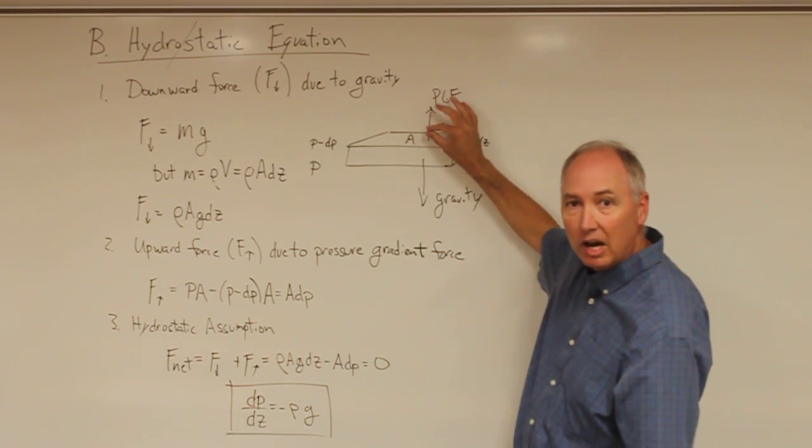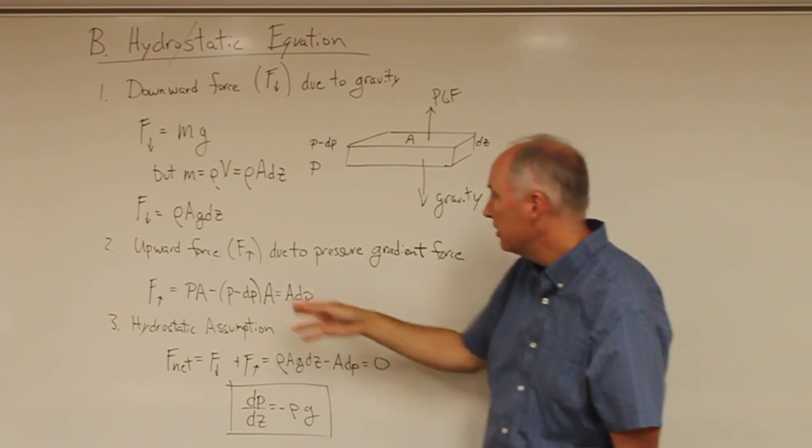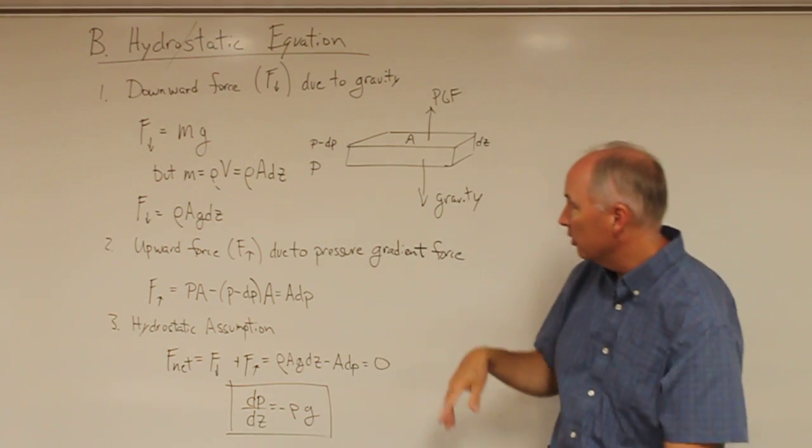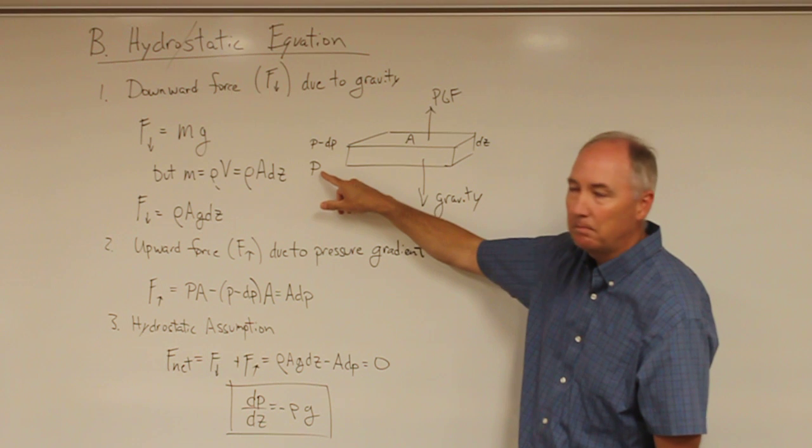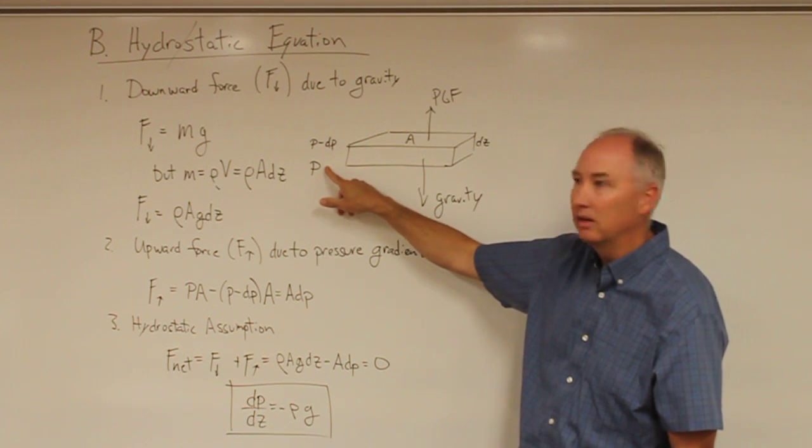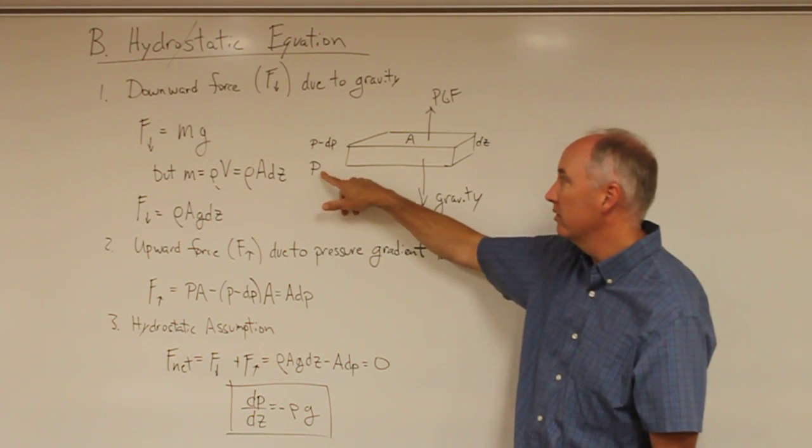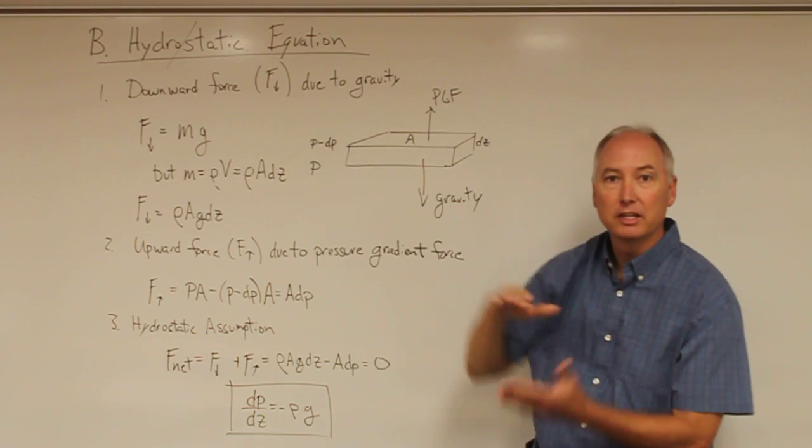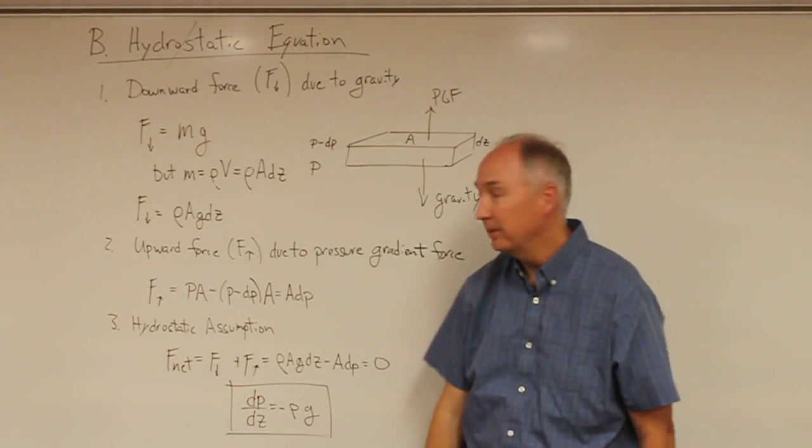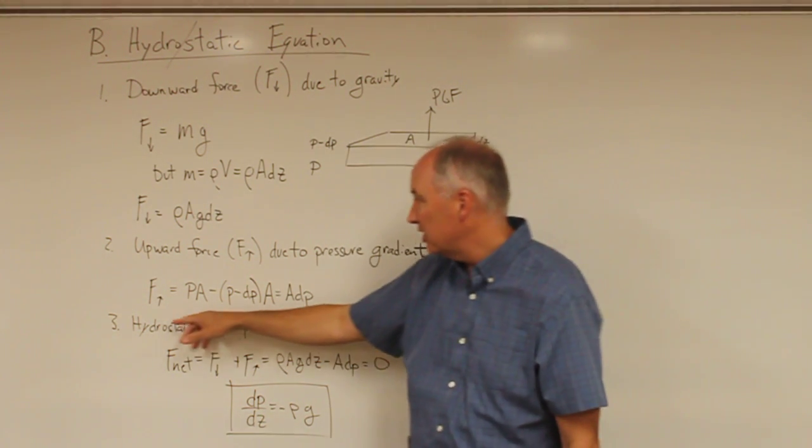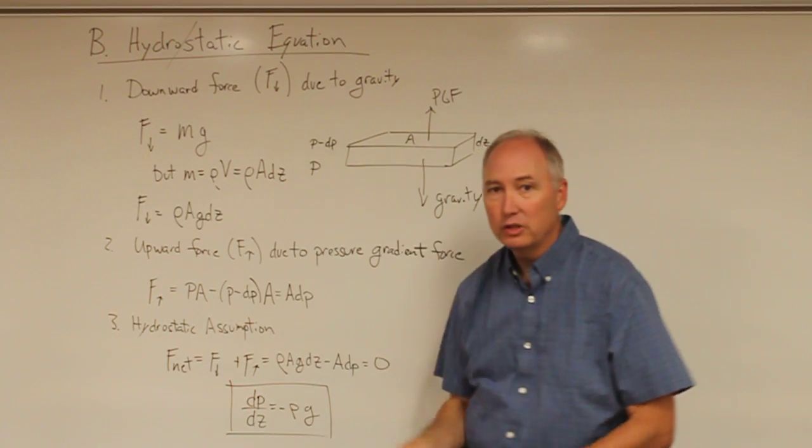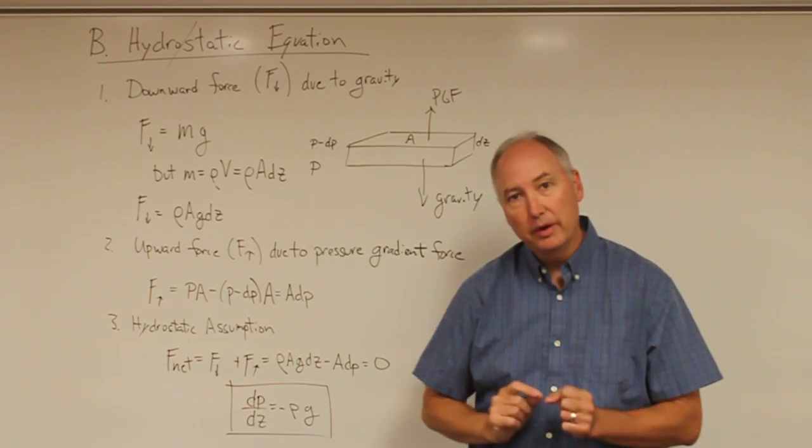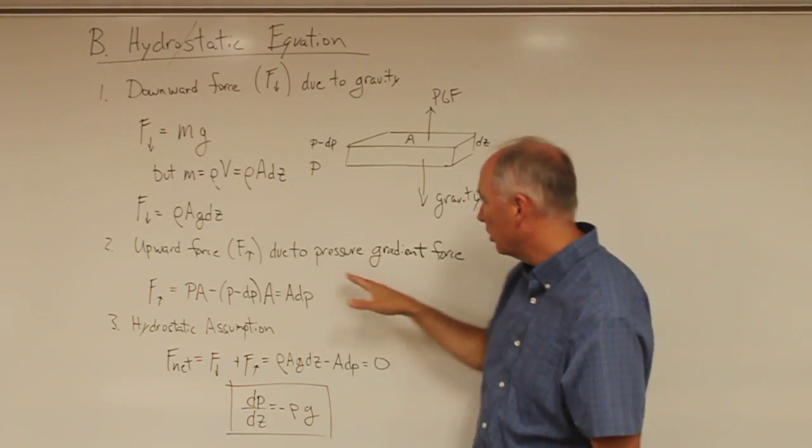But in contrast, the upward directed force of gravity is due to the pressure gradient force, which is simply due to the fact that the pressure at the bottom of this layer is greater than the pressure at the top of the layer, because pressure decreases exponentially with height. And if you recall, the pressure is force per unit area.